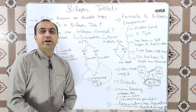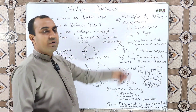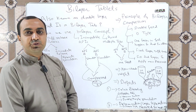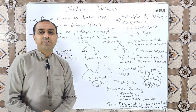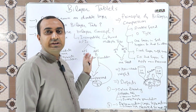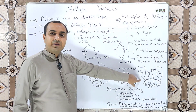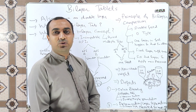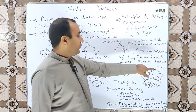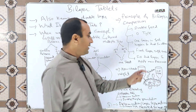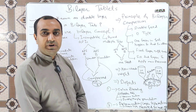Now the most important part is the principle used to compress bilayer tablets. For bilayer tablets, we use a double feed tablet compression machine, which is a D-type tablet compression machine. Looking at the rough diagram, this machine has two hoppers. We add the first layer of one API into the first hopper and the second layer of the other API into the second hopper — separate layers go into separate hoppers.